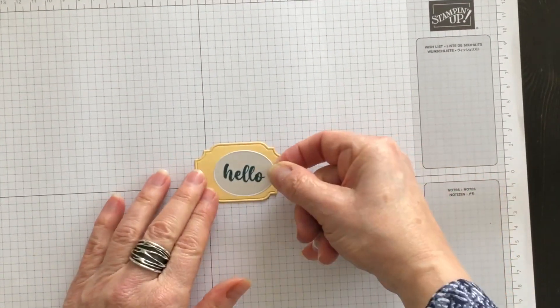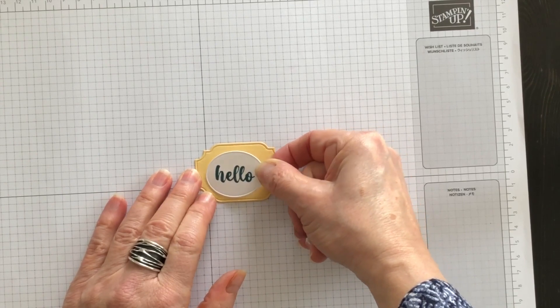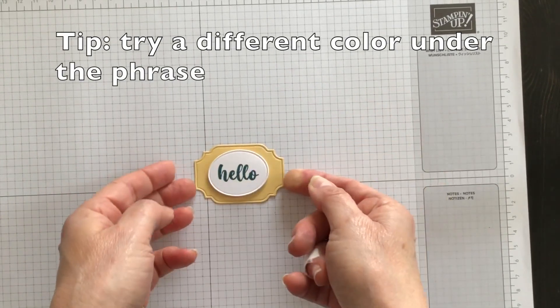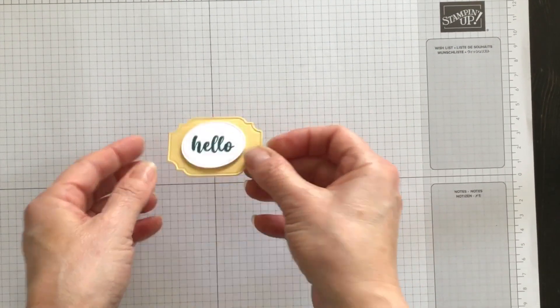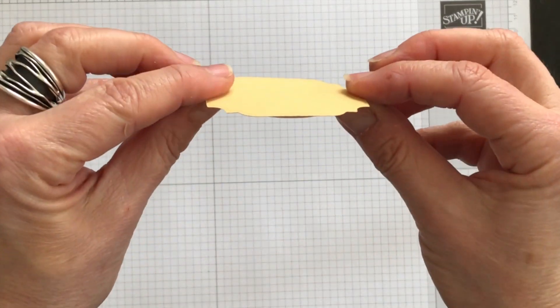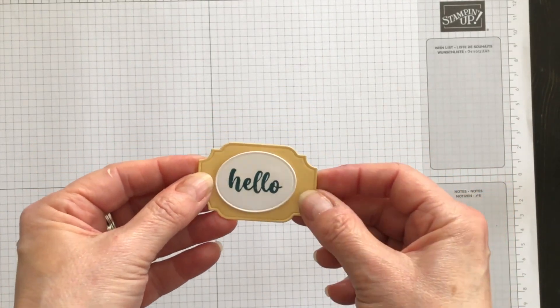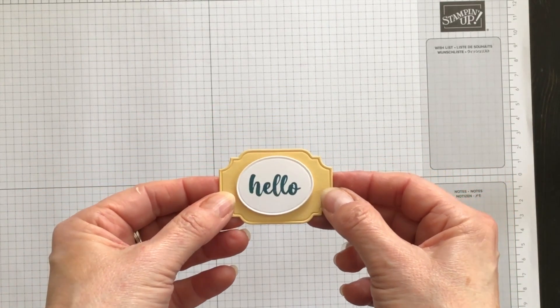There we go, I have these die cut out, and I am going to try and center the Hello onto the So Saffron layer. And I used Stampin' Dimensionals so that it'll give a bit of lift off the layer underneath. Now, let's get going on this fun fold.